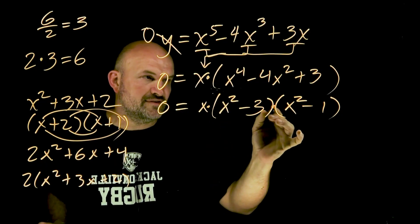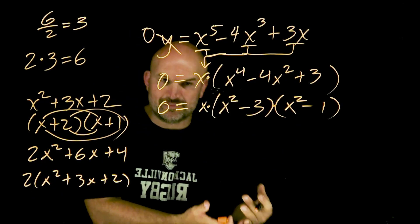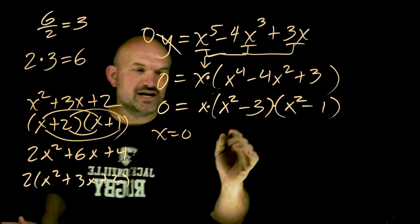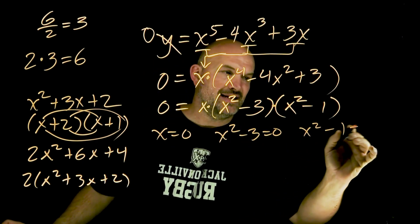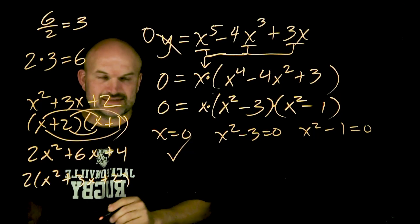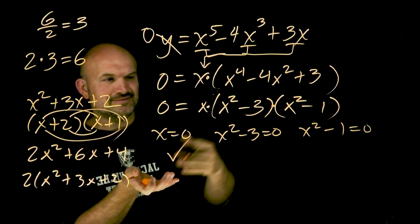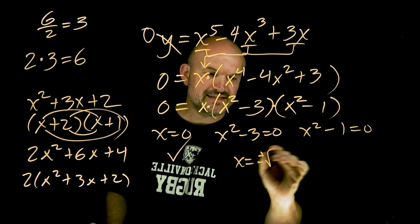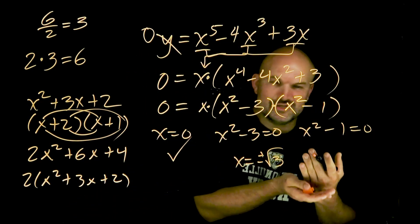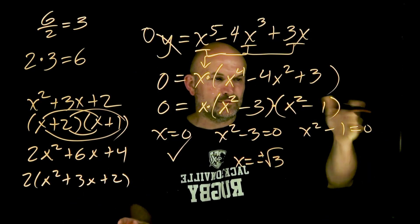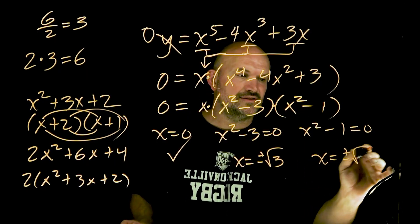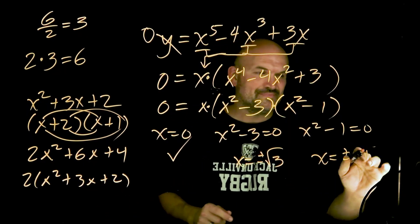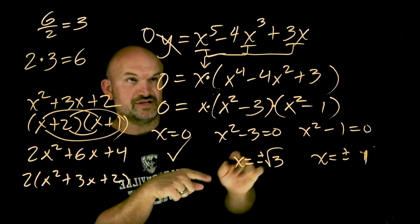The important thing with finding the zeros of a polynomial by factoring is you create what we call the zero product property. When you have a product equal to zero, you can set all factors equal to zero and solve. So x = 0 is one solution. For x² - 3 = 0, add 3 and take the square root: x = ±√3. For x² - 1 = 0, use the square root method — x = ±√1, which is ±1. So we have our zeros, and they all have a multiplicity of 1.